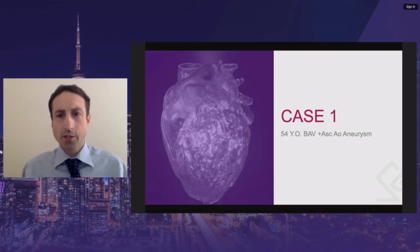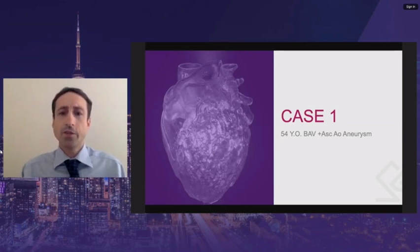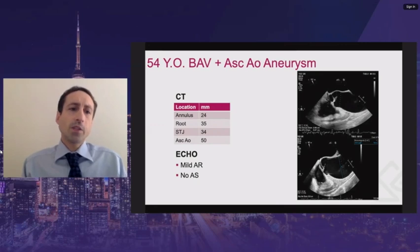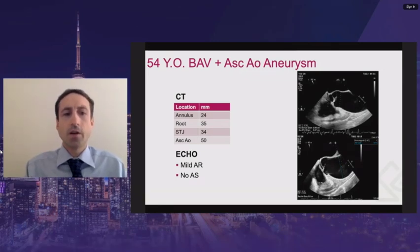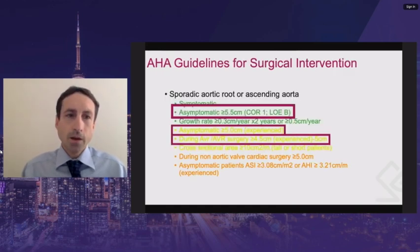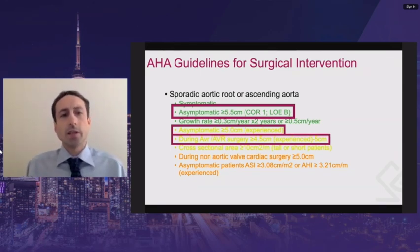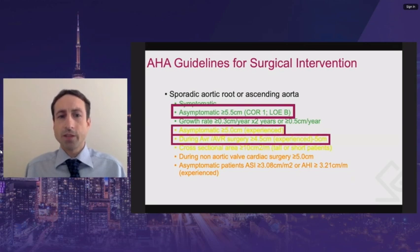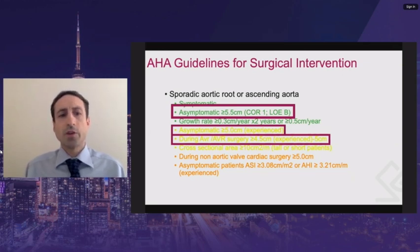The first case is a 54-year-old with a bicuspid aortic valve and an ascending aortic aneurysm. This patient had an annulus of 24 millimeters, a root of 35 millimeters, an STJ of 34 millimeters, and an ascending aorta of 50 millimeters, with mild aortic regurgitation and no aortic stenosis. The American guidelines recommend, as a class one indication, intervention on an asymptomatic root or ascending aorta greater than 5.5 centimeters, which can be decreased to 5 centimeters at experienced centers, and to 4.5 centimeters if already opening the aorta for aortic valve surgery.